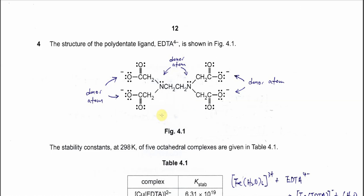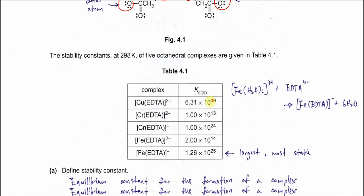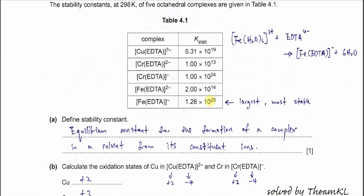Question 4. Figure 4.1 shows the polydentate ligand EDTA. This polydentate ligand has six donor atoms, which means it can donate six lone pairs to form six dative bonds with the metal cation. That's why we call EDTA a polydentate ligand. Table 4.1 shows the Kstab values for the five complex ions with EDTA.